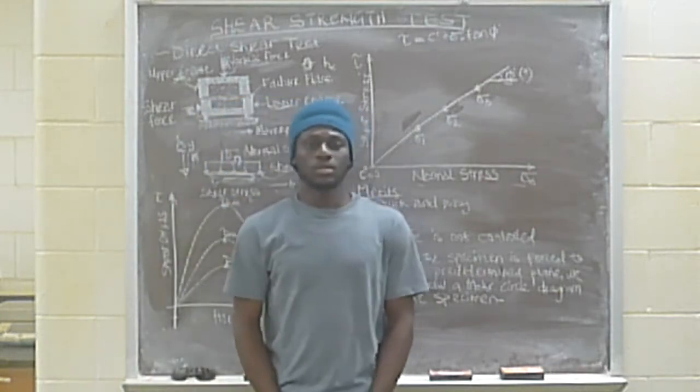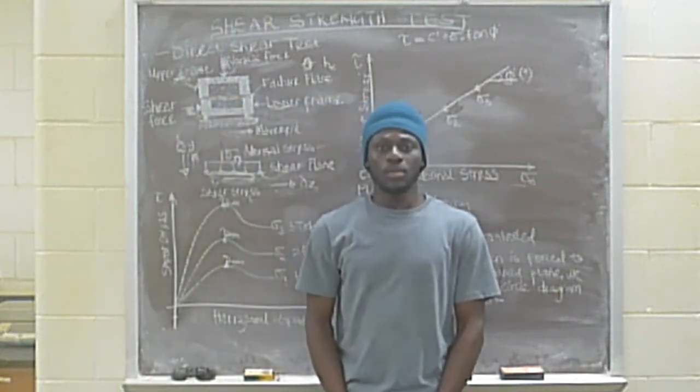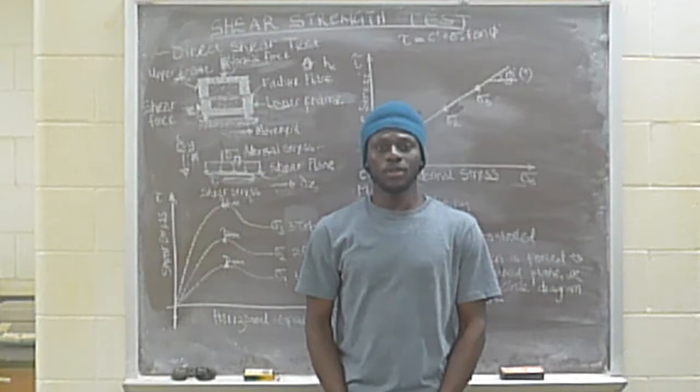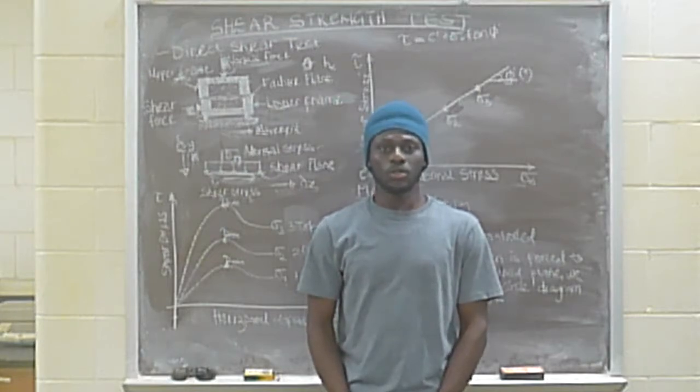For the direct shear test the drainage is not controlled and because the soil is forced to fail in the horizontal direction, we cannot plot Mohr circle diagrams for the direct shear test.